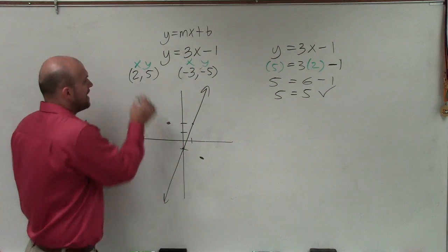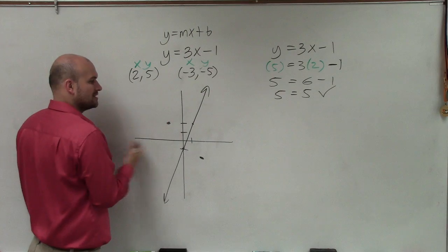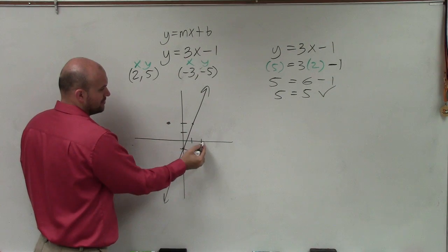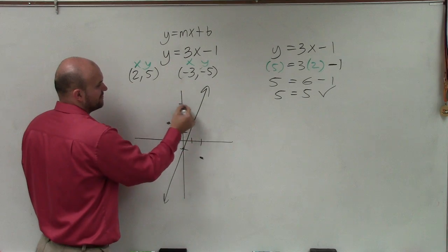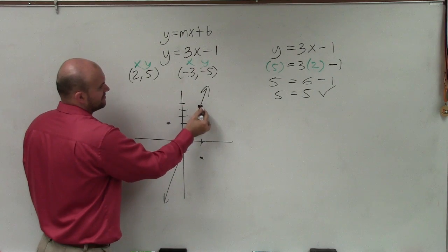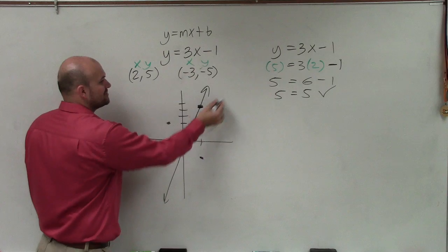So since that's true, that means this point is on the line. So let's look at that graphically to make sure that's correct. So I go over 2 and then up 5. 1, 2, 3, 4, 5. Over 2, up 5. I mean, my graph's a little bit off, but yes, you can see it works.